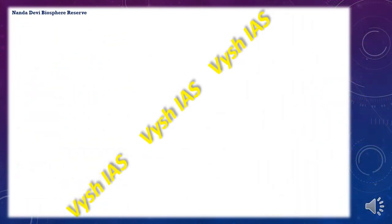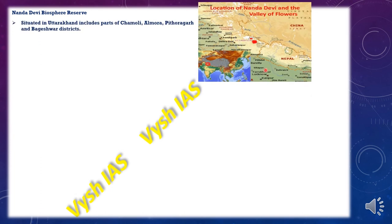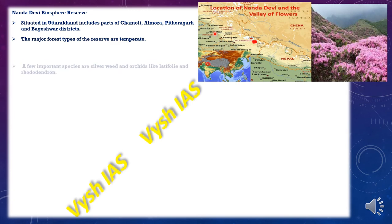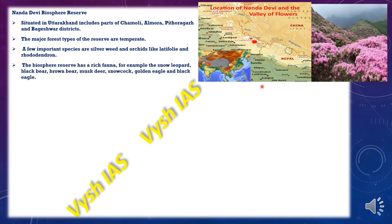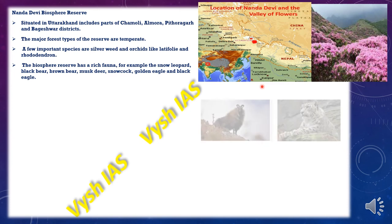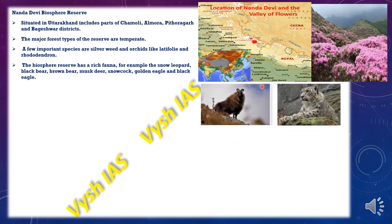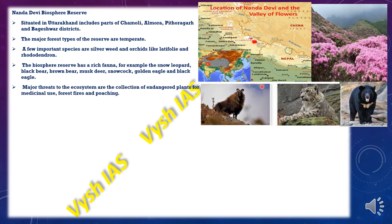The Nanda Devi Biosphere Reserve is located in Uttarakhand and includes parts of Chamoli, Almora, Pithoragarh and Bageshwar districts. The major forest types are temperate forests, and important species include silverweed and orchids like Latifolia and rhododendron. It is very rich in fauna, with animals such as snow leopard, black bear, brown bear, musk deer, snow cock, and golden and black eagle. The major threats to this ecosystem are collection of endangered plants for medicinal use, forest fires and poaching.